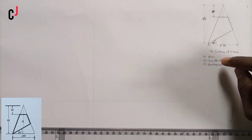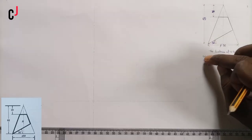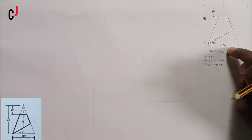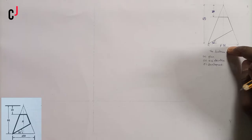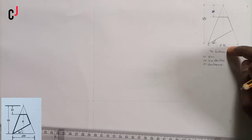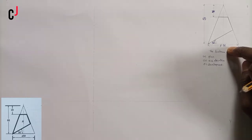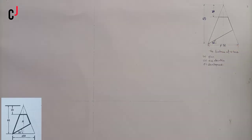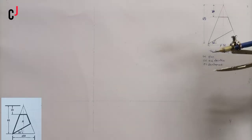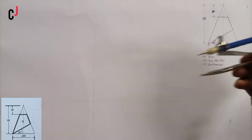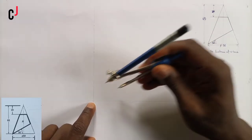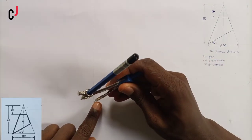First thing we'll do is produce our plan. Given that the base of our cone is 50 millimeters, the diameter is 50 millimeters, so we'll take the radius which is 25 millimeters. I've already picked it on my ruler. Now I'll bring it to this point of intersection here and draw my circle.